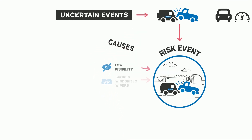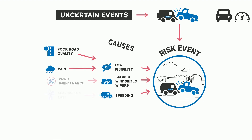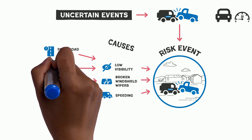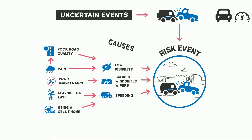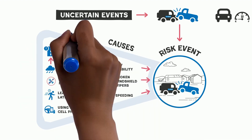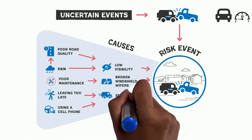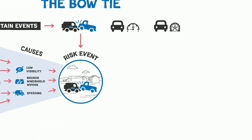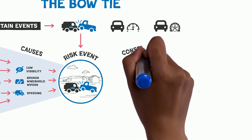Then establish what the causes of this specific risk event could be, and write them down on the left-hand side of the bowtie. Keep in mind that there can be causes of causes. To determine these root causes, keep thinking through the question: why could this happen? Remember, causes may also be interrelated and not necessarily linear.